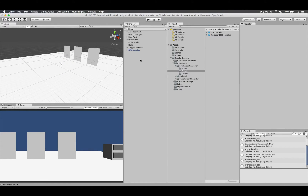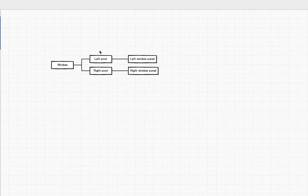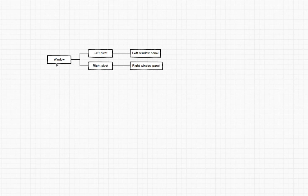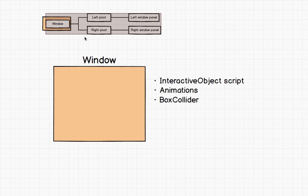Now let's create the windows. Setting up the object hierarchy for the window is going to be a bit confusing, so before jumping straight into Unity, let's go through a small overview. We're going to have a root game object called Window, and inside that we're going to have two more game objects. Inside one of those we'll have the actual panel — the mesh renderer — which is the one you'll actually see as a window panel. The Window object will have the Interactive Object script, the animation, and the box collider.